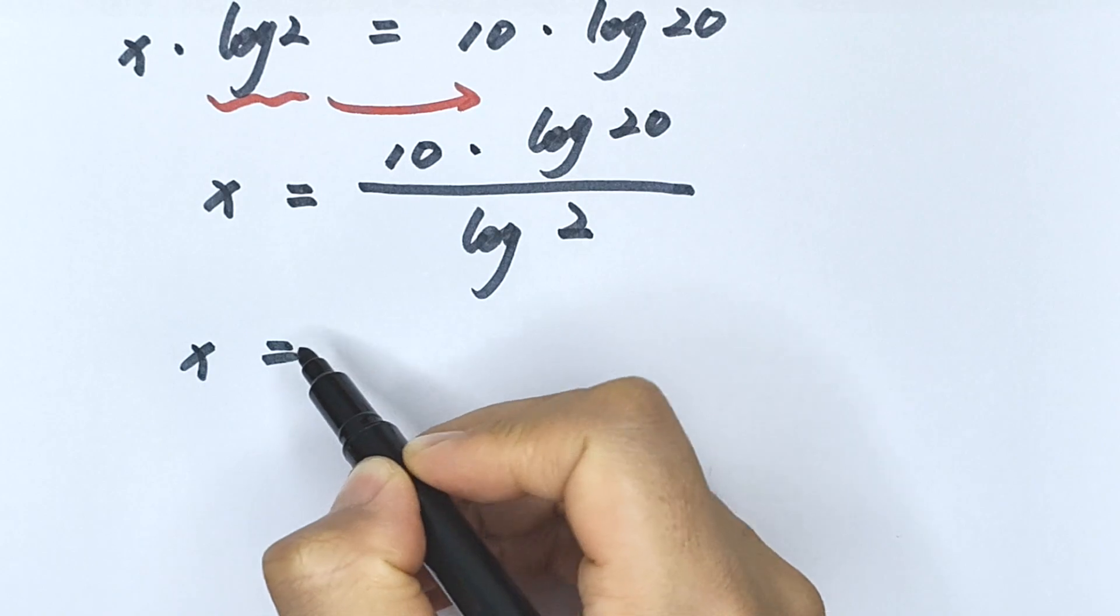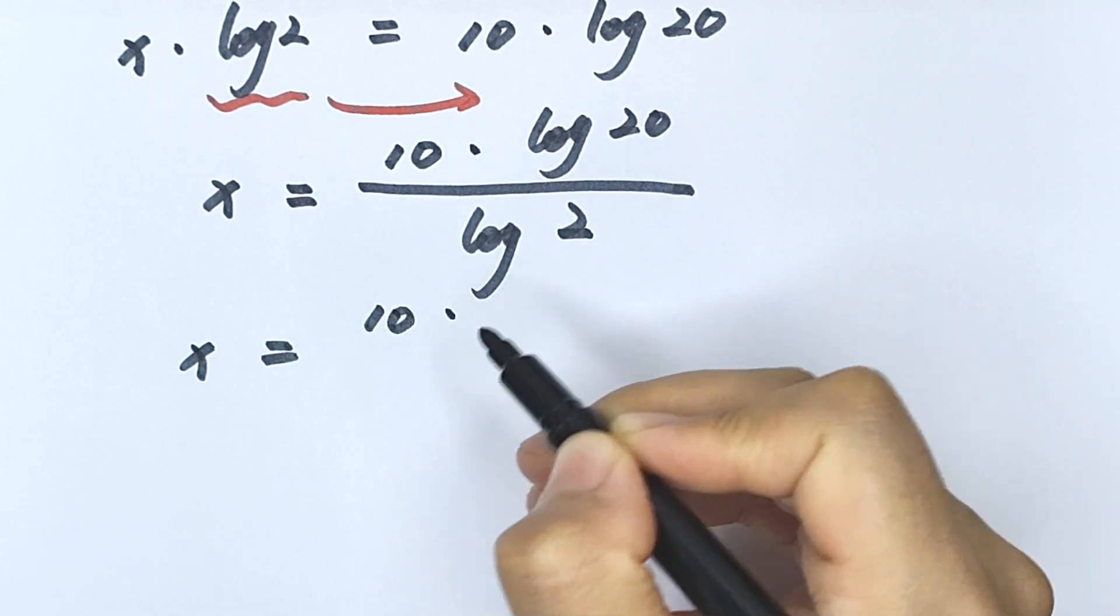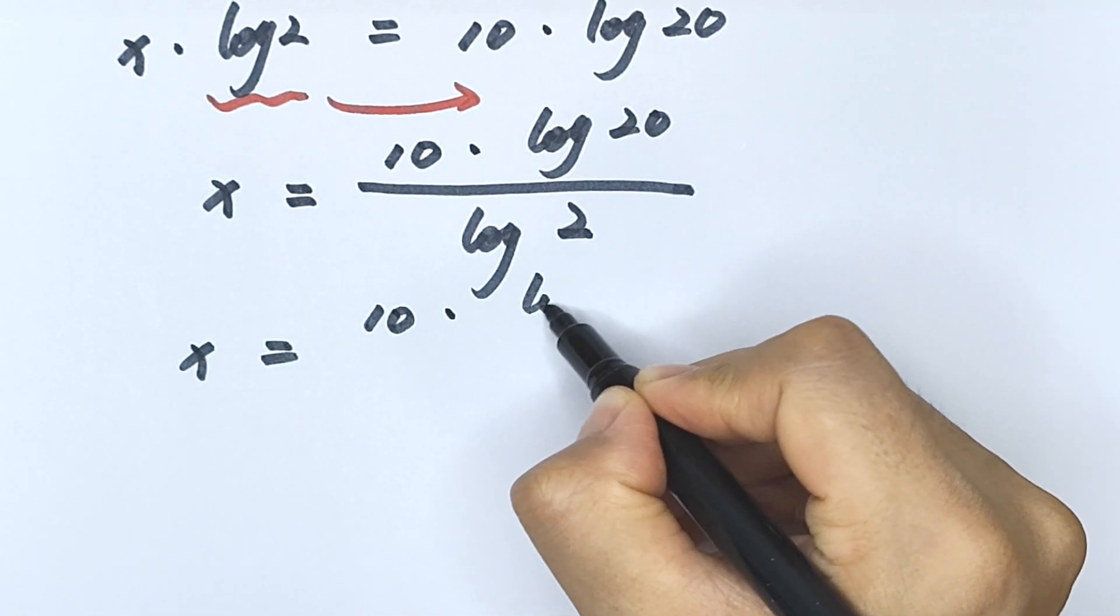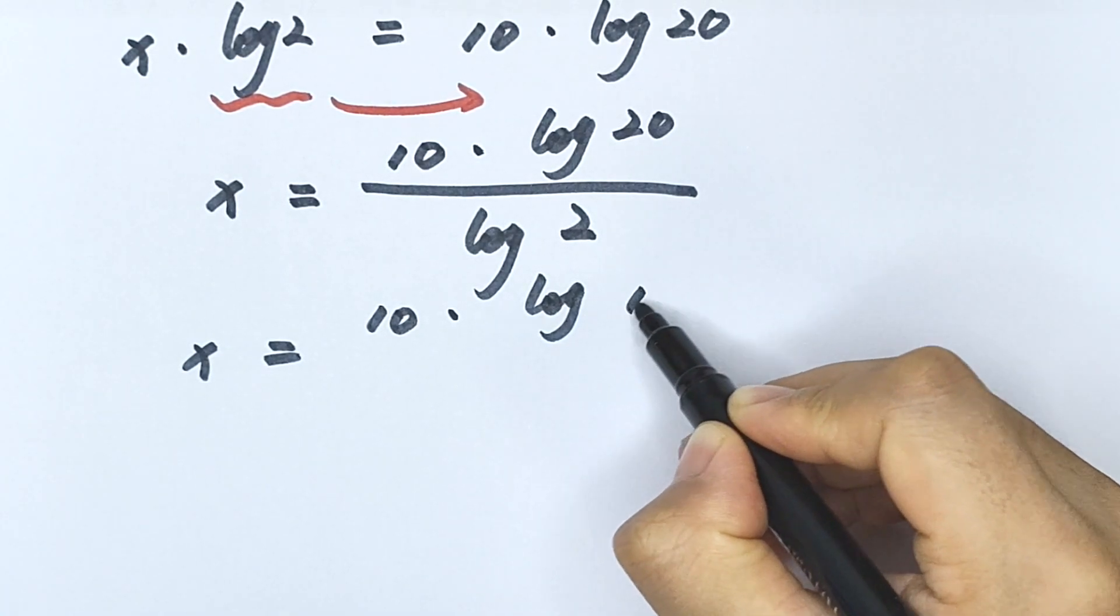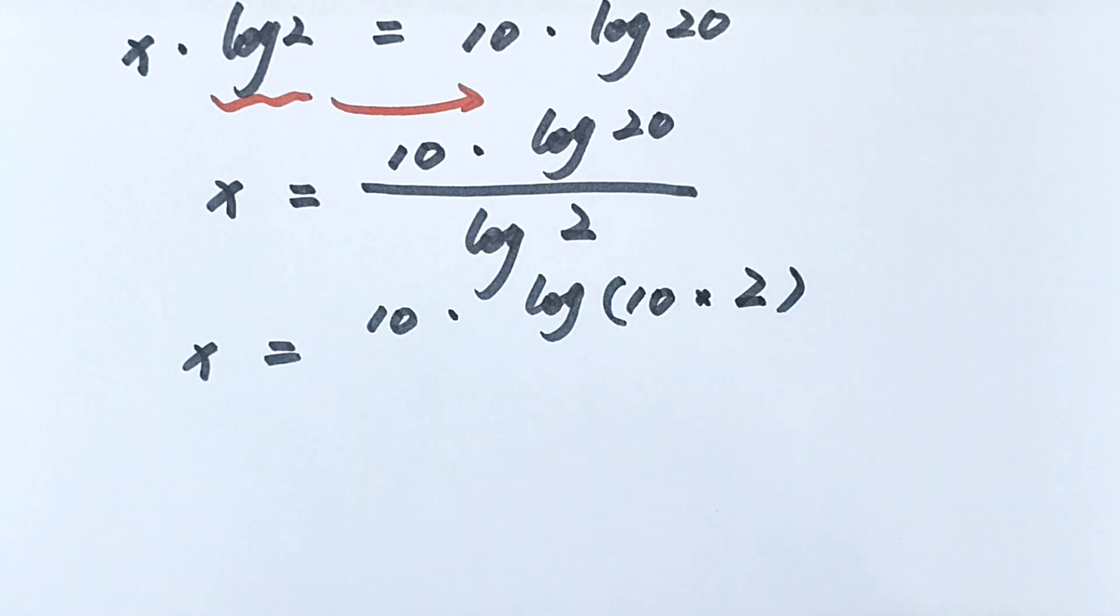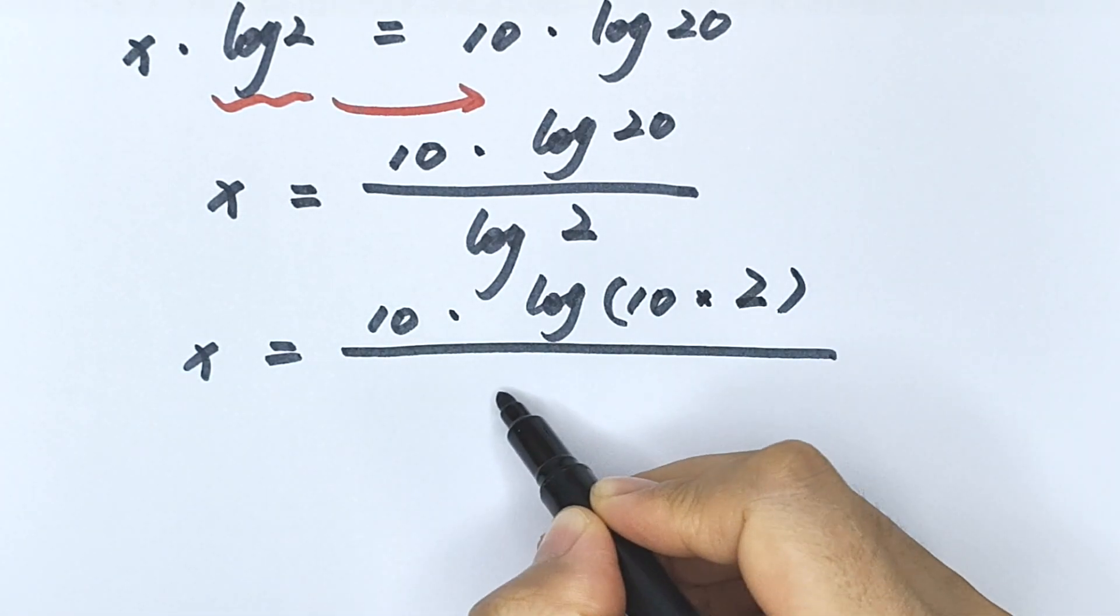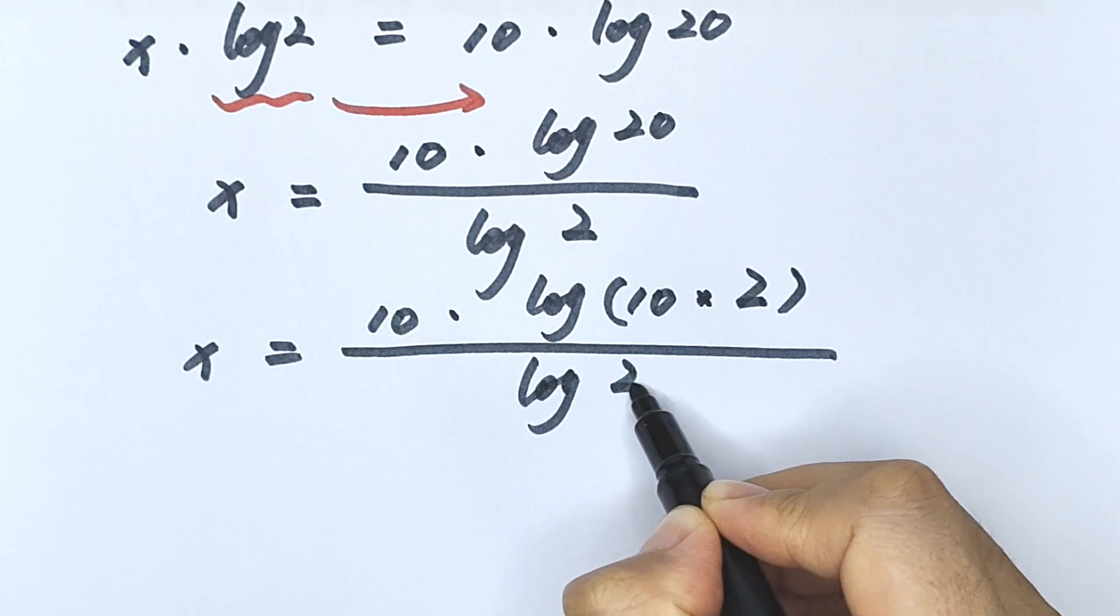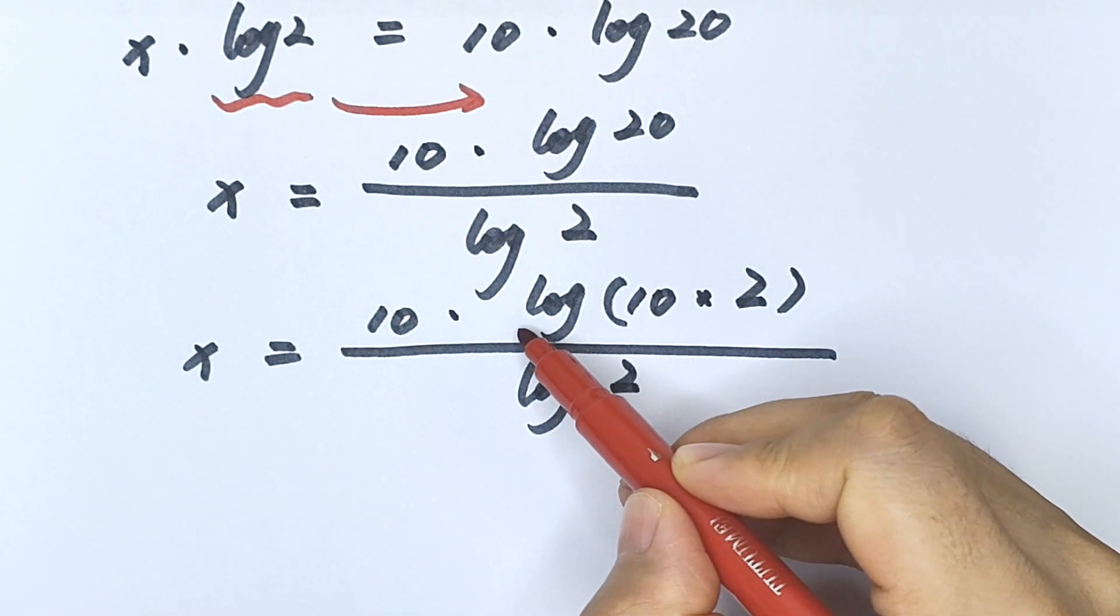Then x equals 10 times log 20, which is the same as 10 times 2 divided by log 2. Now we look at this part.